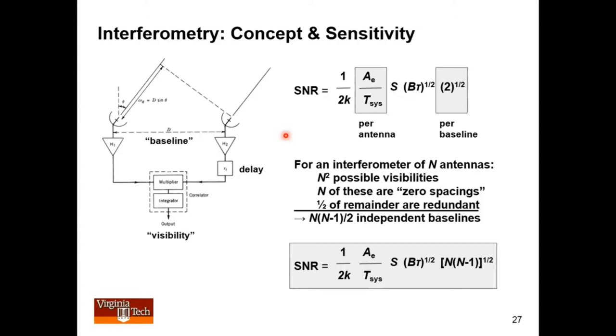As you add antennas, you get more sensitivity. If you have n antennas, you have n-squared possible ways to form these correlations. That's n-squared possible visibilities.